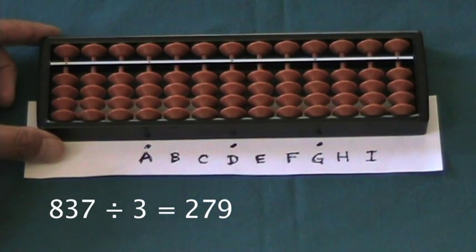This is 837 divided by 3 equals 279. Following an earlier note, we're going to set the divisor 3 on rod A.